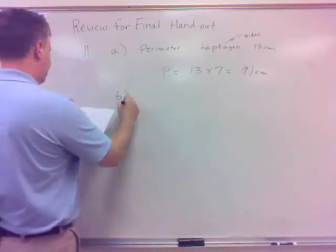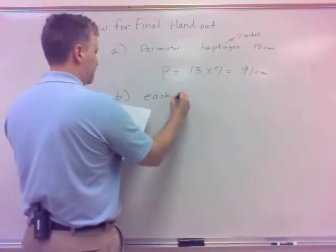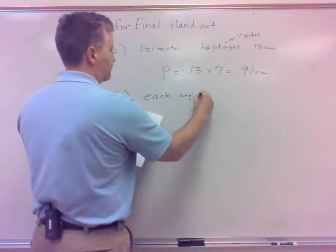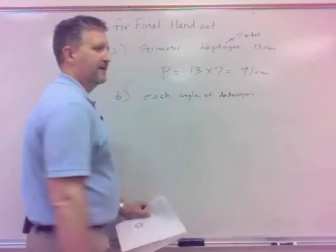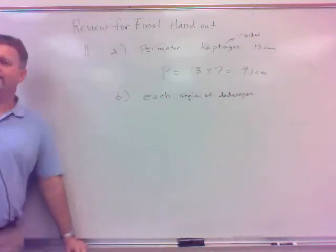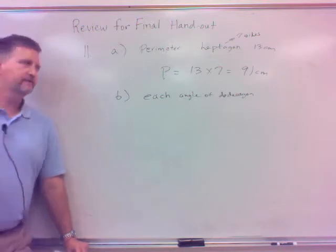All right, here's another one. Find the measure of each angle of a dodecagon. Well, just a decagon is how many? A decagon is 10, and do means basically 2, so it's 2 plus 10, 12. Yeah, 12 sides.